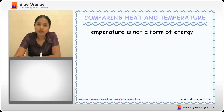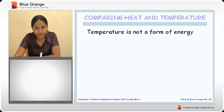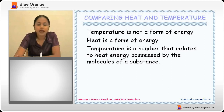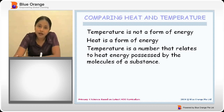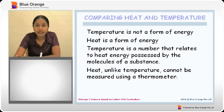Heat is a form of energy. Temperature is actually the measurement of heat. So temperature cannot be a form of energy — but heat is. We measure heat by taking the temperature of the substance. Temperature is actually the number that relates to the heat energy that the molecules of a substance possess. Unlike temperature, heat cannot be measured using a thermometer. We can only measure temperature using a thermometer.